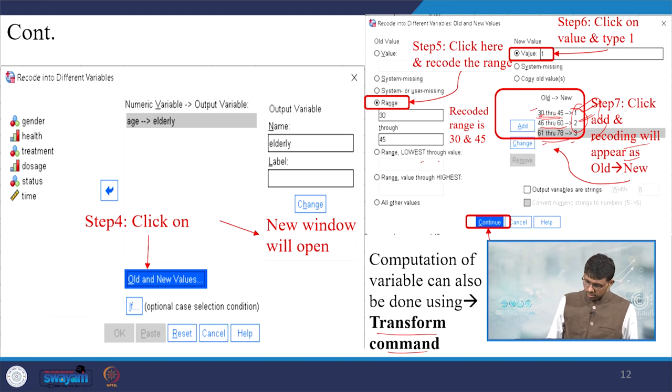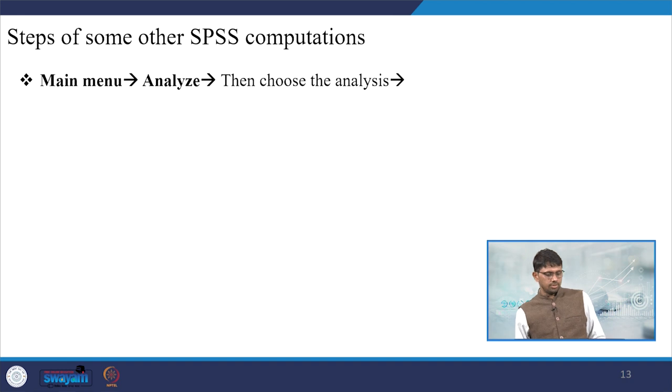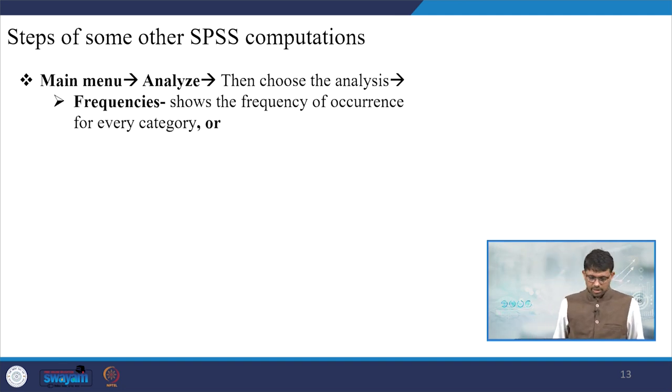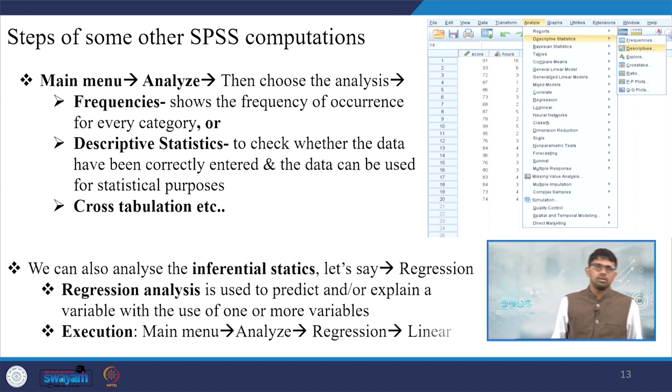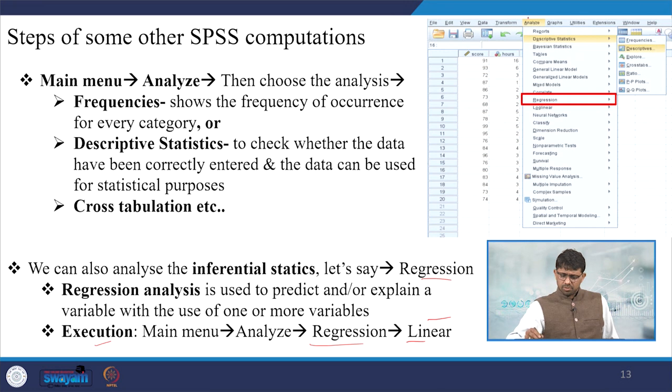Computation of variable can also be done using the Transform command. For SPSS computations, go to the main menu, click Analyze, then choose the analysis such as frequency, descriptive analysis, cross-tabulation. For inferential statistics like regression analysis, you have to click here. For basic frequency distribution, descriptive statistics is more than enough.